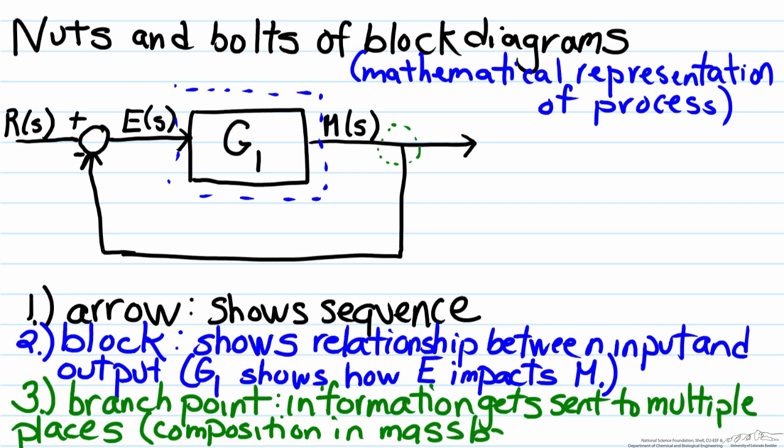From the mass balance standpoint, when you have a stream, let's say 80 kilograms per minute of a 50-50 solution of water and salt, if you break the stream in half, assuming a well-mixed system, both streams will have the same composition. That's the idea of the branch point.